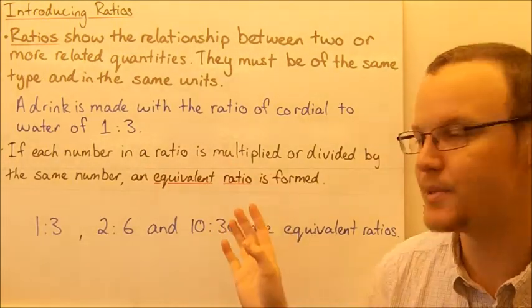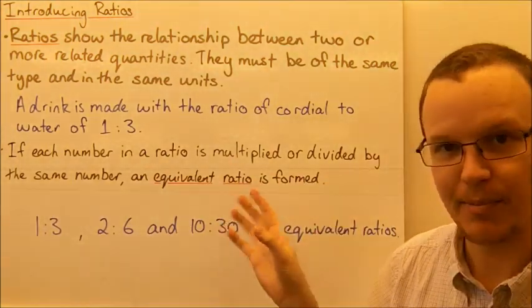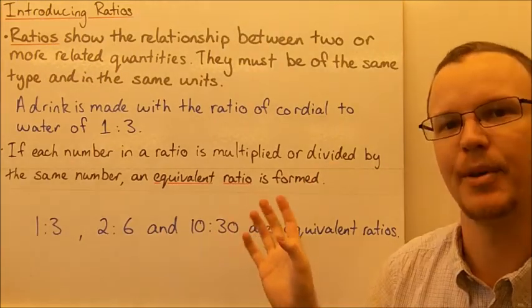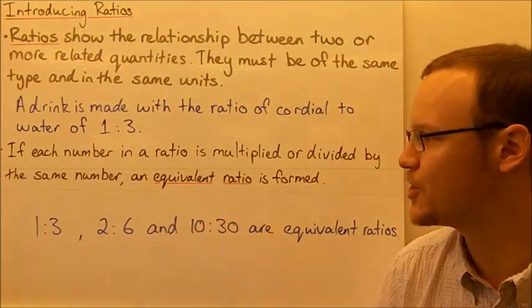So if we multiply both numbers in a ratio by the same number or divide both numbers in a ratio by the same number, we get an equivalent ratio.